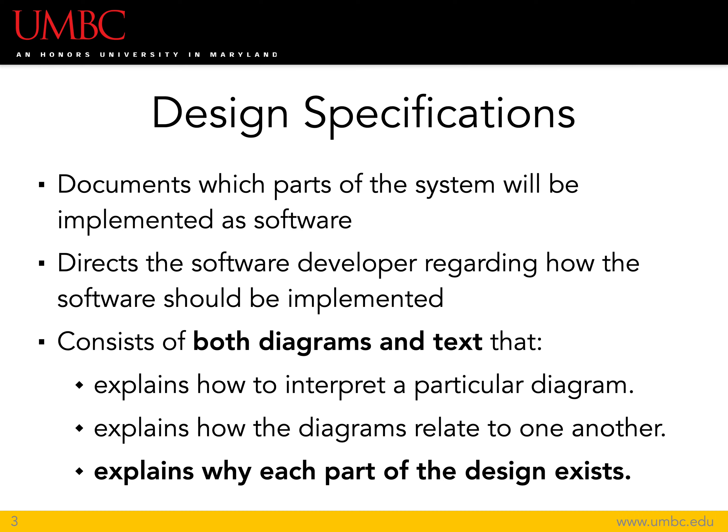Design specifications consist of both diagrams and text, and you need both. If you only have one, the interpretation is going to be more ambiguous. If there's an ambiguous statement in the text, you can look at the diagram to potentially resolve that ambiguity, and vice versa — if there's an ambiguous part of the diagram, you can refer to the text to disambiguate it. This relationship between diagram and text is actually one of the key things that makes software development precise and makes it possible to develop working, functional software systems.